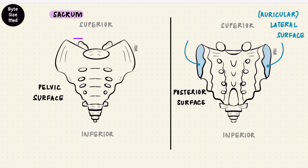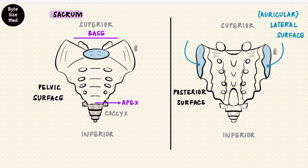The superior surface of the first sacral vertebra forms the base of the sacrum. If it has a base, it has an apex — the fifth sacral vertebra forms the apex, because the five vertebrae are arranged one below the other from base to apex. On either side there are wing-like projections called the ala of the sacrum. The anterior projection of the body of the first sacral vertebra is called the sacral promontory, and you're going to hear about this a lot when studying obstetrics.